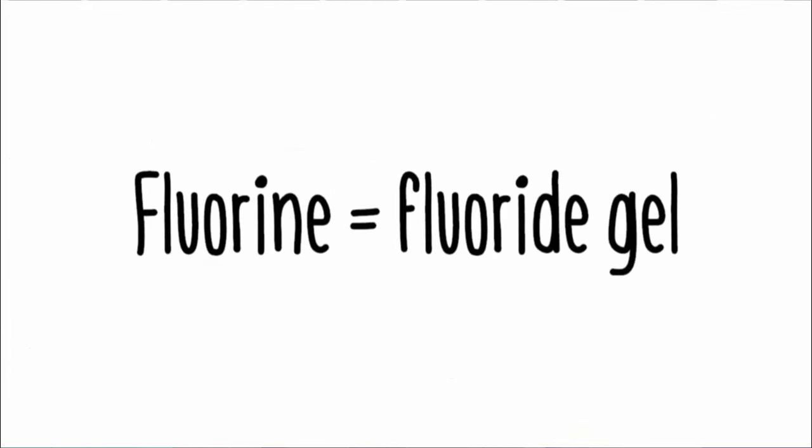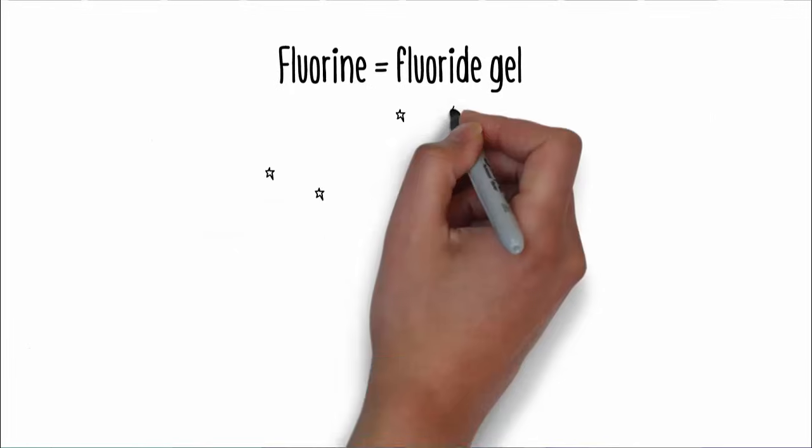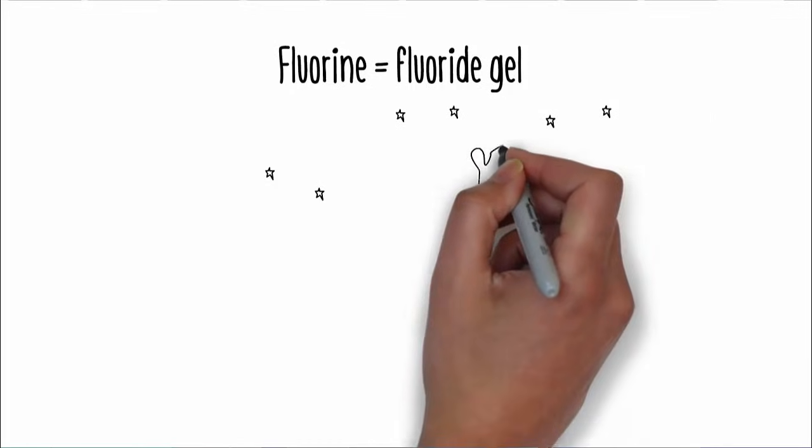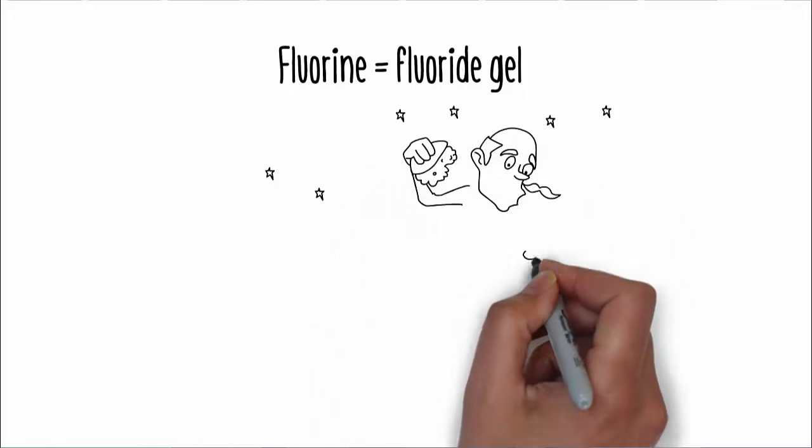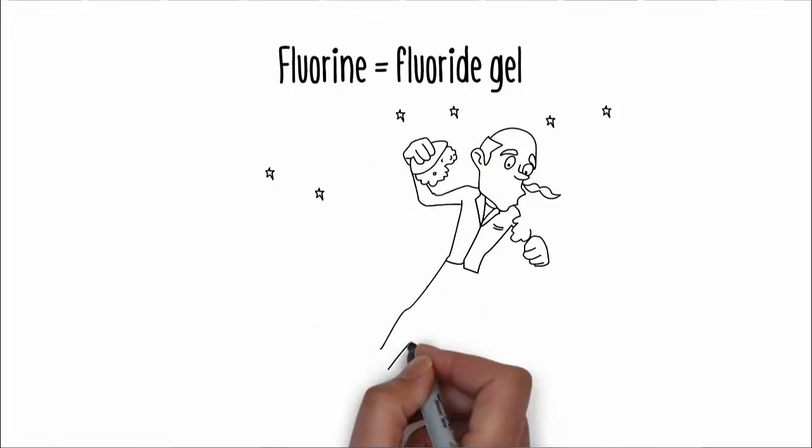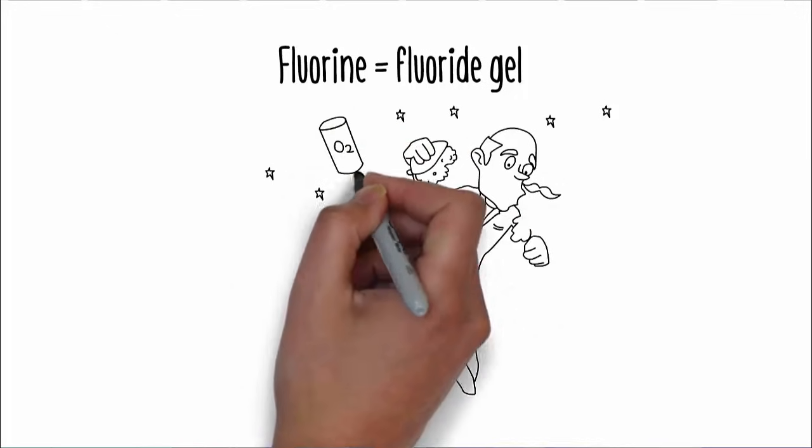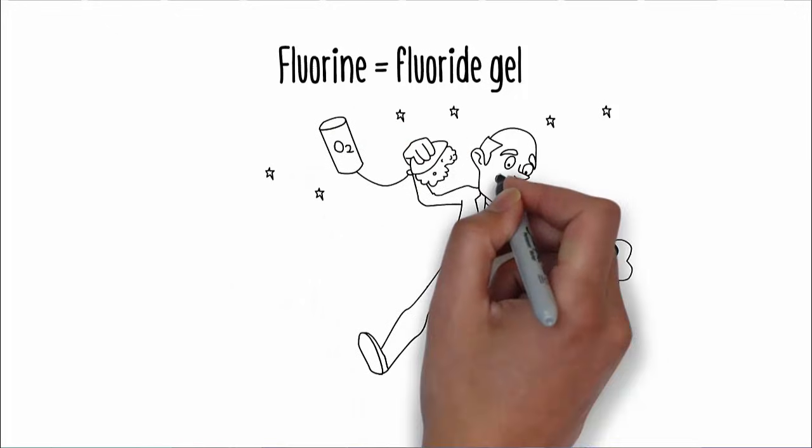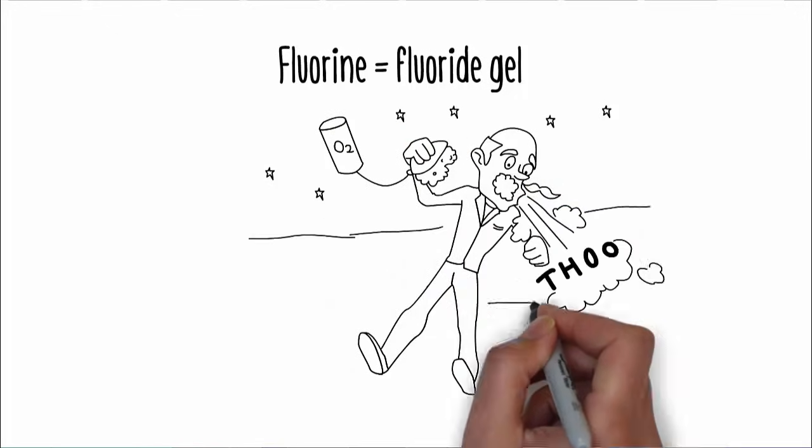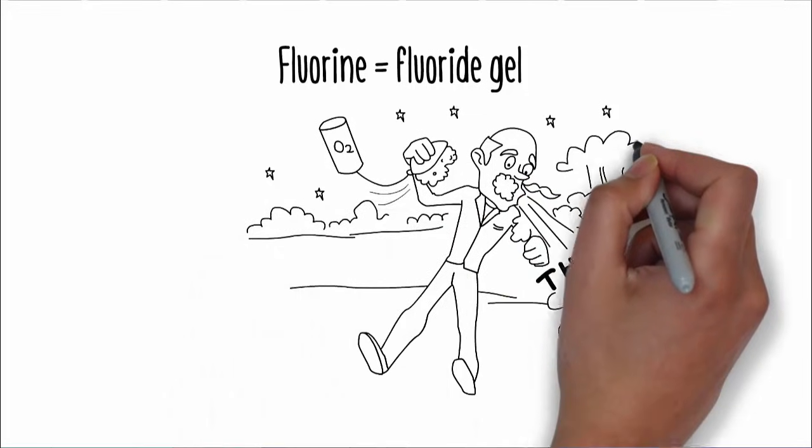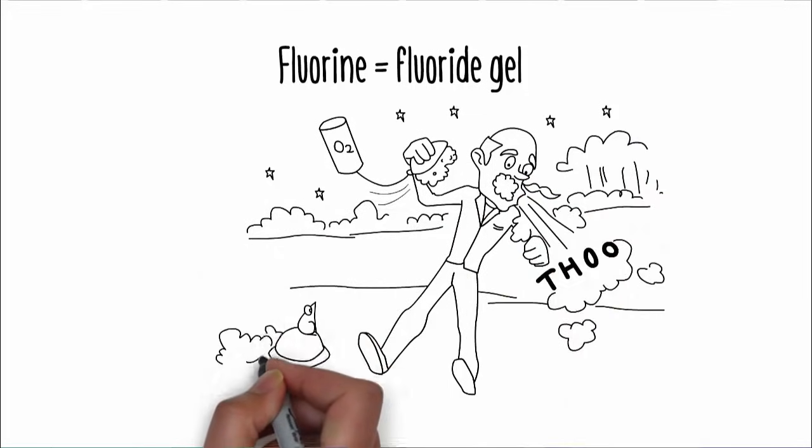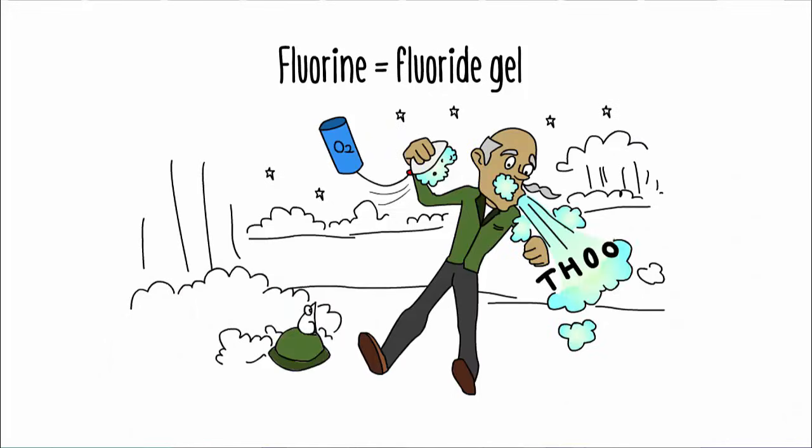The ninth element is fluorine. Fluorine sounds similar to fluoride, like fluoride toothpaste or the fluoride gel dentists put on your teeth. The gel helps strengthen your teeth and it has an interesting taste and a weird texture as well because it's like a paste that gets smeared onto your teeth. Imagine now the oxygen mask the general has been sucking oxygen from is now actually filled with fluoride gel. Picture him sucking in oxygen and then suddenly getting a mouthful of fluoride gel. All of his teeth are coated with it and he starts to spit it out.